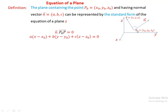We observe that the normal vector n is perpendicular to the directed vector from P-naught to P, which means n dot P-naught-P is equal to zero. Therefore, with n having components a, b, c and P-naught as x-naught, y-naught, z-naught, and P as x, y, z, we get: a(x − x-naught) + b(y − y-naught) + c(z − z-naught) = 0. This is called the standard form of the equation of a plane.